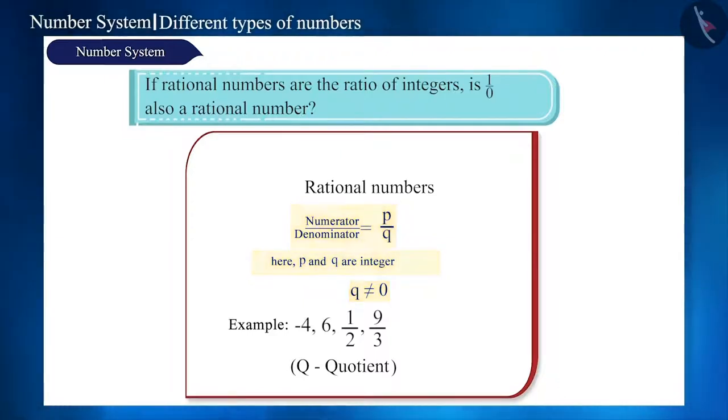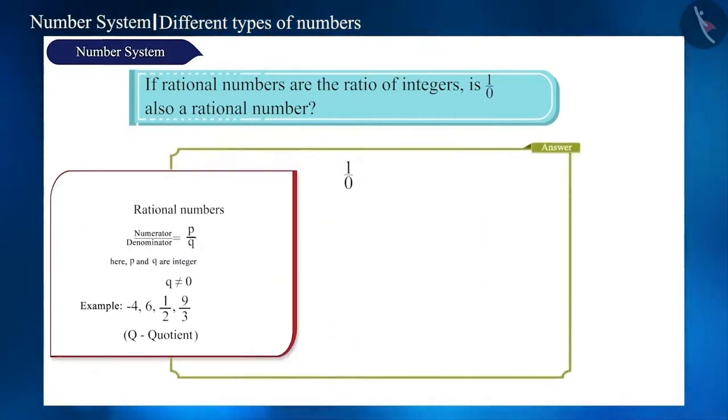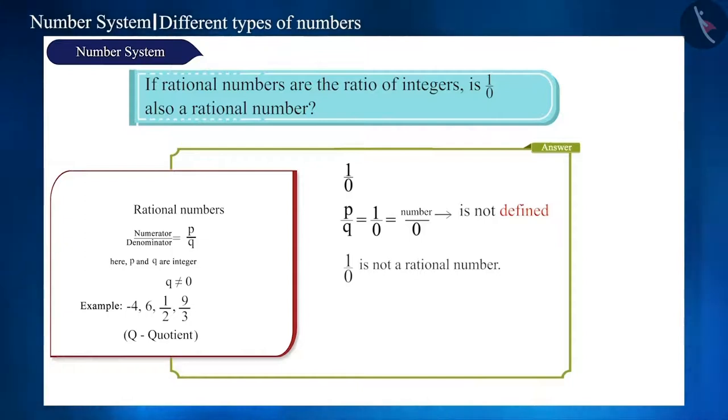But why do we say that? 1 by 0 or any integer by 0 means dividing that number by 0. Can you divide any number by 0? The division of any number by 0 is impossible. Therefore, in P by Q where Q is 0, it is called an undefined number. 1 by 0 is not a rational number. Rather, it is undefined.